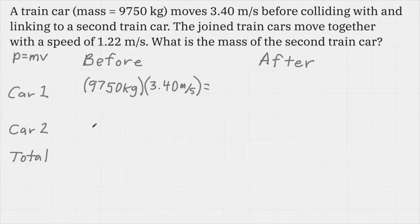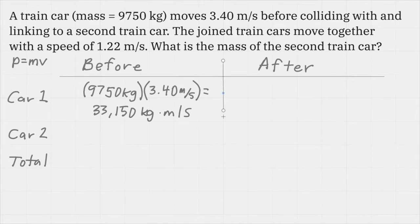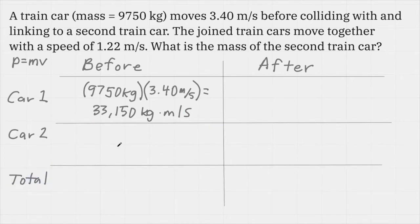We multiply those two numbers together to get the momentum. That value is 33,150 kilogram meters per second. I'm not going to do any rounding until the last step. Let me also add a couple of lines to keep track of my information. For the second car we have zero momentum. It's not moving at all. So our total momentum before the collision is all in car 1. I'll rewrite that value down here.